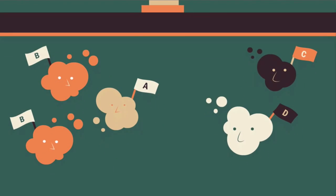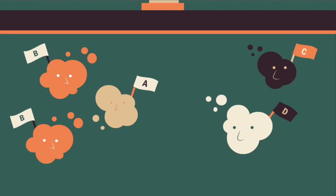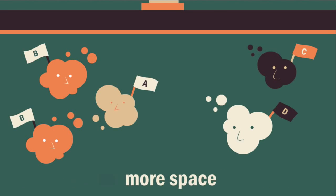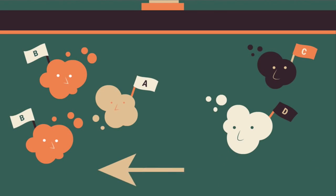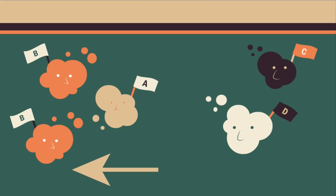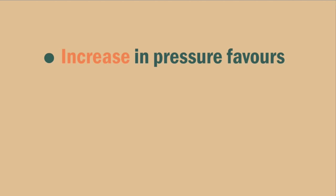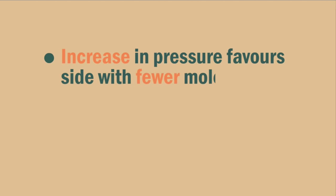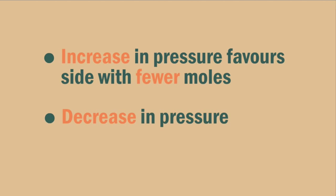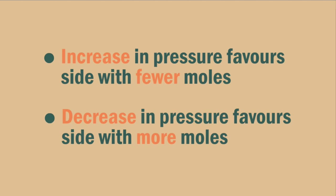A decrease in pressure means that there is an increase in volume, so there is more space. Equilibrium shifts to the side with more moles, so in our example equilibrium shifts to the left. So an increase in pressure favors the side with fewer moles, and a decrease in pressure favors the side with more moles.